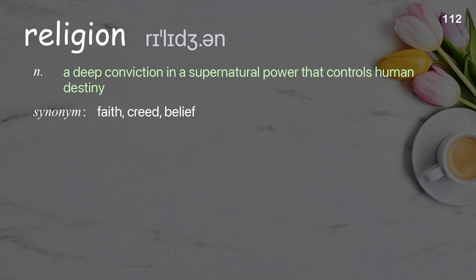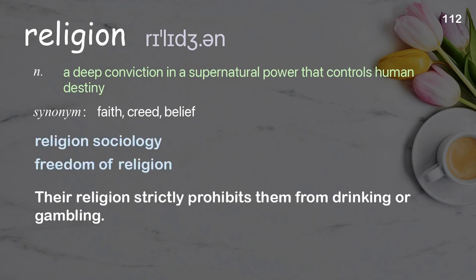Religion: a deep conviction in a supernatural power that controls human destiny. Examples: religion sociology, freedom of religion. Their religion strictly prohibits them from drinking or gambling.